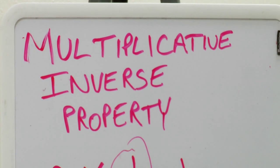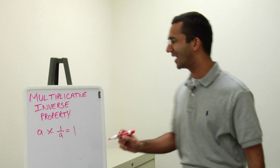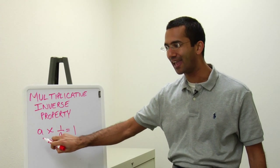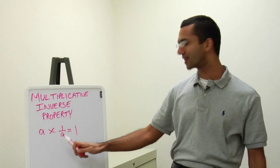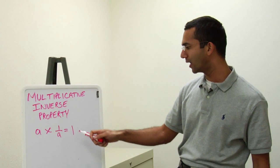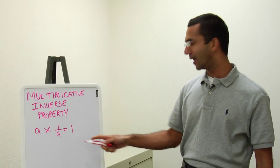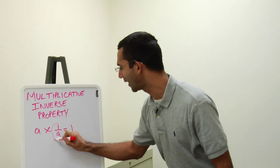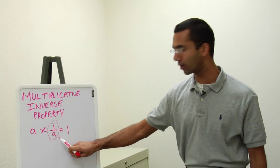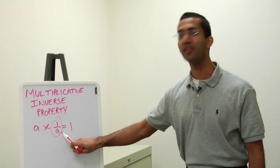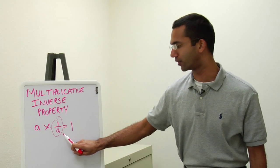The definition of the multiplicative inverse property is that for every a, there exists a number such that a times 1 over a will equal 1. And the 1 over a here, this is known as either the reciprocal of a or the multiplicative inverse of a.